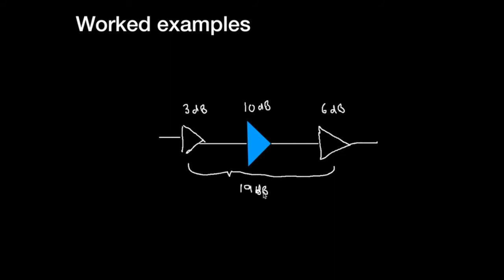If we want to find what that is in times, we can say that that equals, we type in 1.9 because we have to go back to bells, and we press second function 10 to the x and that is 79.4 times or approximately 80 times.